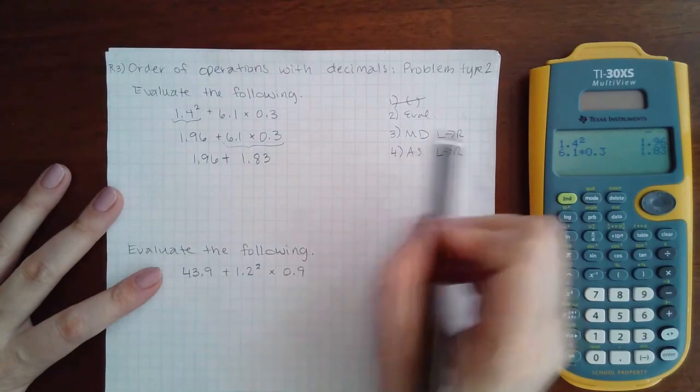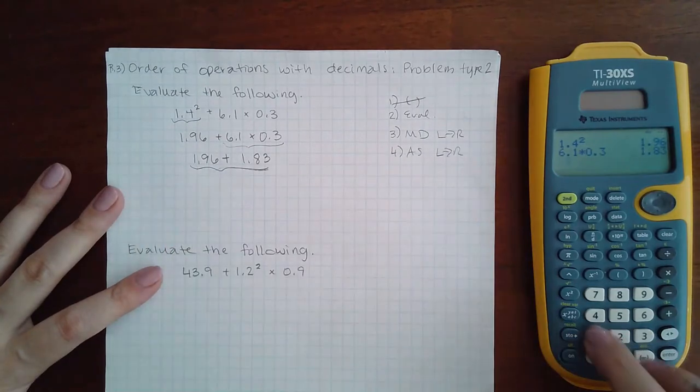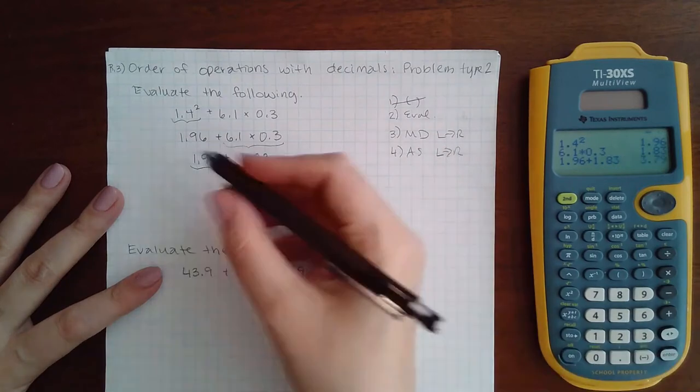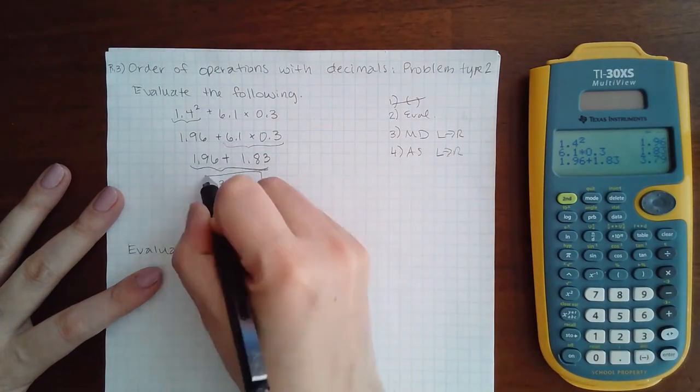There's only one addition here, so I'm going to do that. 1.96 plus 1.83 is 3.79, and this is the final answer.